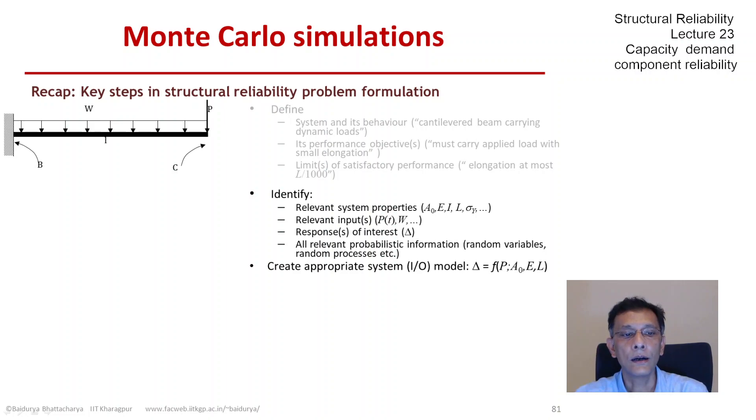We have been doing this for the last few weeks and we can identify the properties that are important in the mechanics of the problem and any uncertainty, any relevant probabilistic information we should have or we should be able to get. And then we have an appropriate system model which relates the output with the inputs and the system properties.